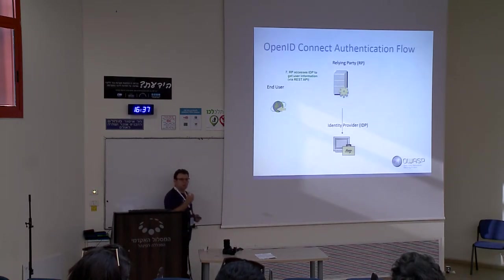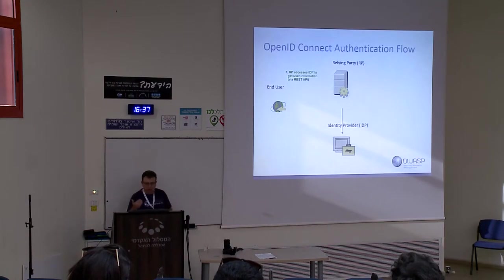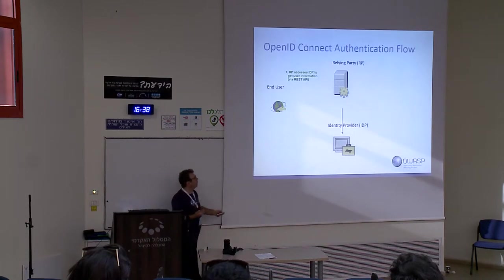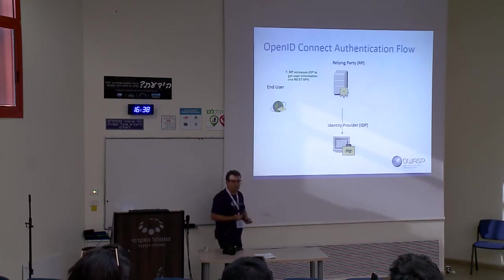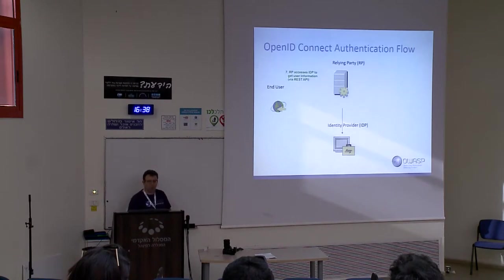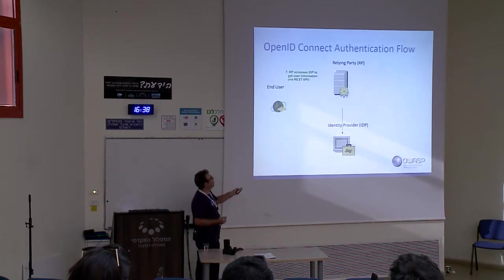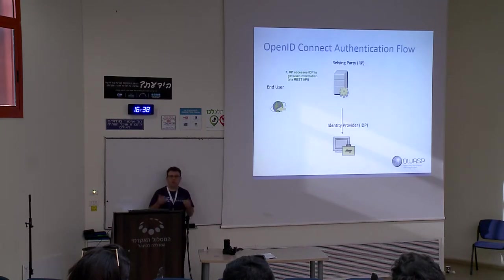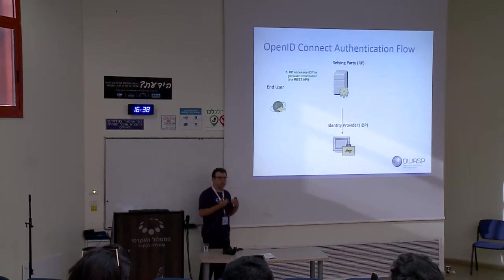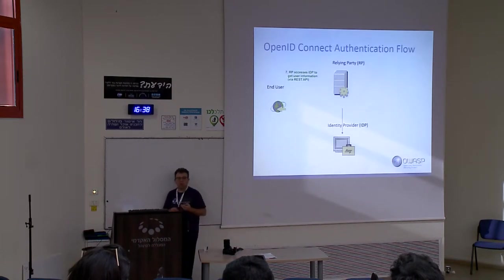I presented a flow called the authorization code flow, which is quite common. We use it in a traditional web application where there is a back-channel from the RP backend to the IDP. There is an additional flow called the implicit flow. In implicit flow, the identity information about the user is provided with the last request to the RP. You can use it when you have, for example, a JavaScript-only application, since JavaScript cannot access the IDP via back-channel.